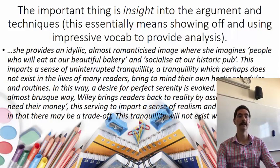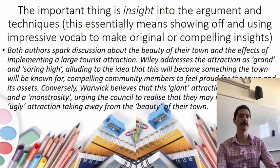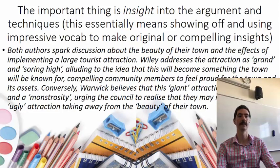You can see this is a good analysis of the text, but what really jumps out is the level of vocab and the types of meta-language used. Here's another example: 'Both authors spark discussion about the beauty of their town and the effects of implementing a large tourist attraction. Wiley addresses the attraction as grand and soaring high, alluding to the idea that this will become something the town will be known for, compelling community members to feel proud for the town and its assets. Conversely, Warwick believes that this giant attraction will be ugly and a monstrosity, urging the council to realize that they may not want a huge, ugly attraction taking away from the beauty of their town.'